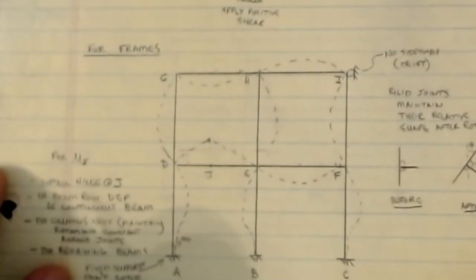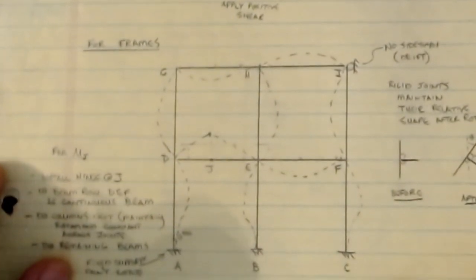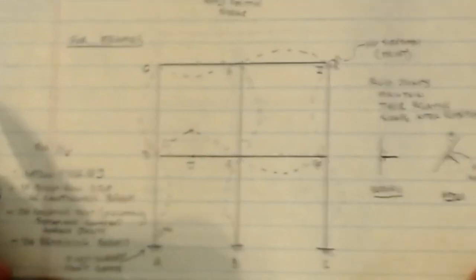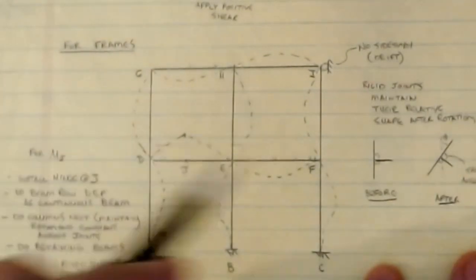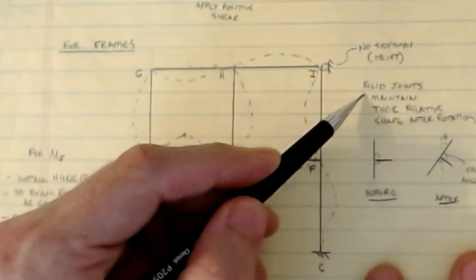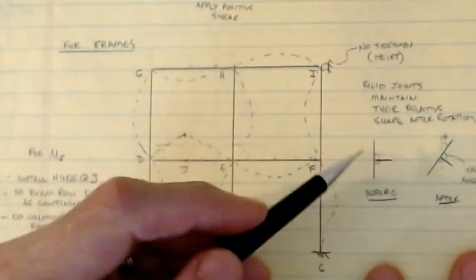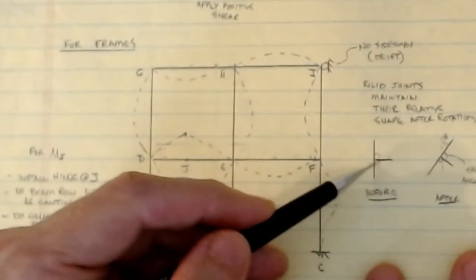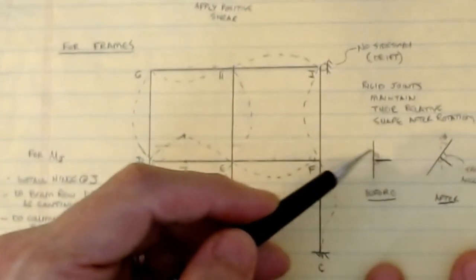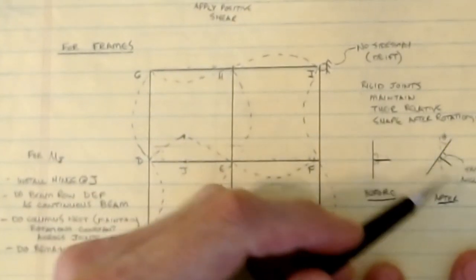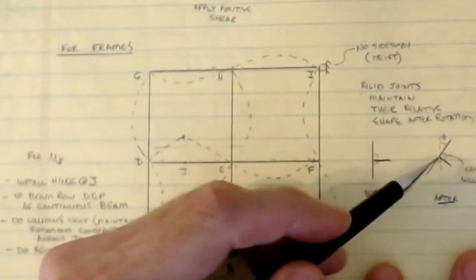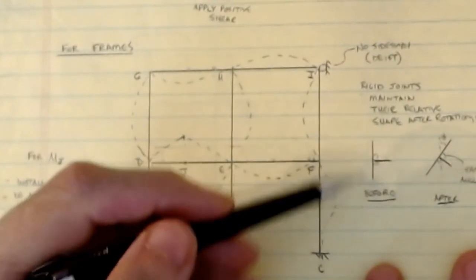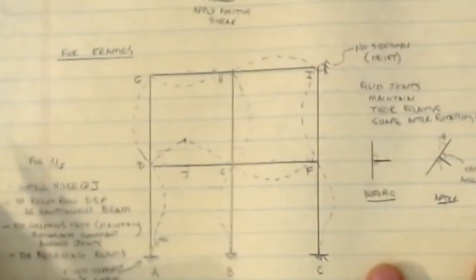Now let's apply these ideas to frames. The key additional concept is rigid joints: a joint maintains its relative angle to all beams and columns framing into it. If a column and beam meet at 90 degrees before deformation, after any rotation at the joint that 90-degree angle is maintained. The joint rotates as a unit. This is the key to figuring out the shapes of influence lines in framed structures.